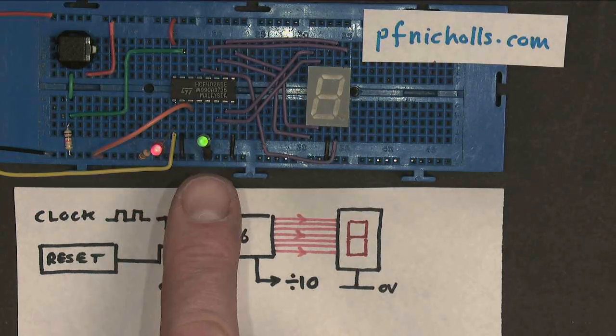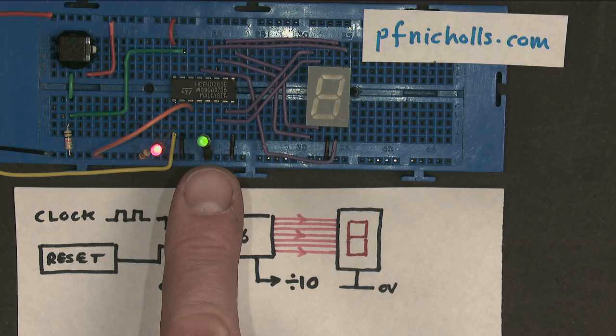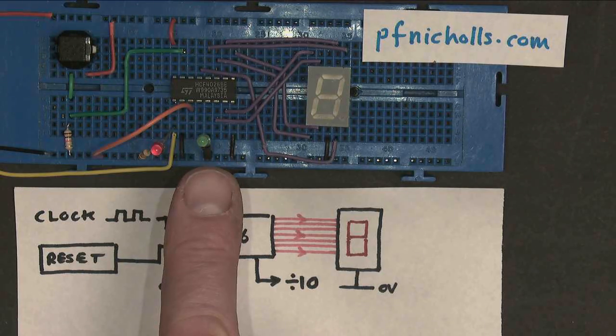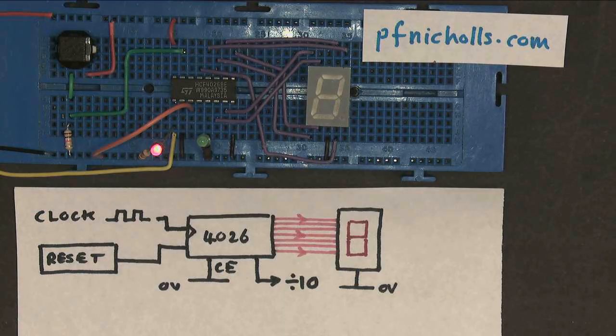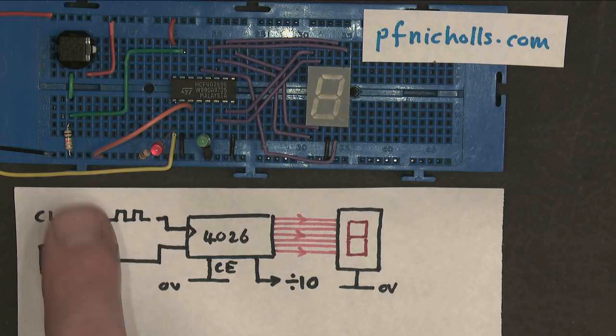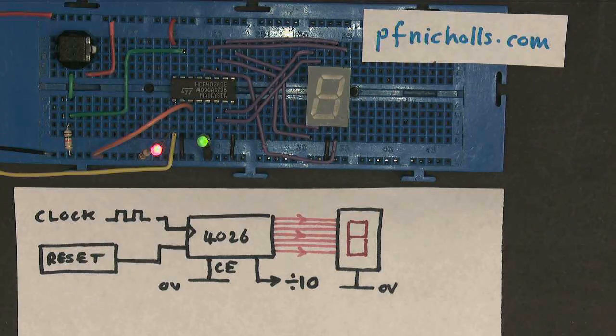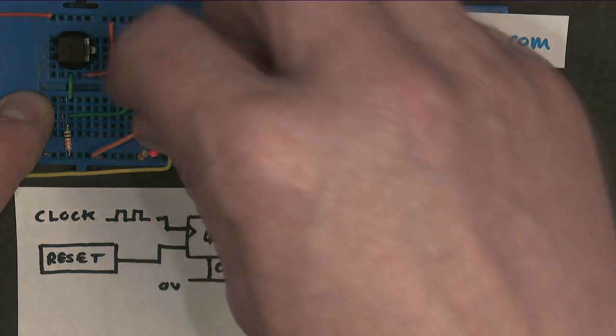However, the counter is still counting. It's still giving me a divide by 10 output. It's just that it's not driving the display. So this can be used to turn the displays off to save energy, or if you apply a square wave to that input, it can be used to make displays dimmer or brighter.